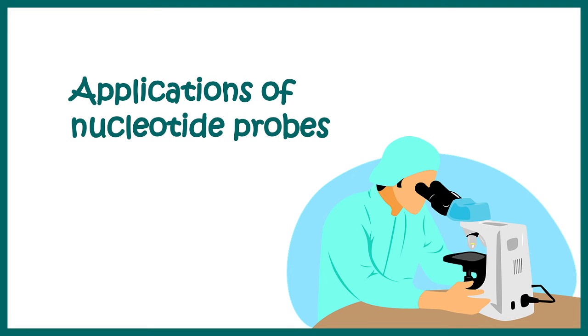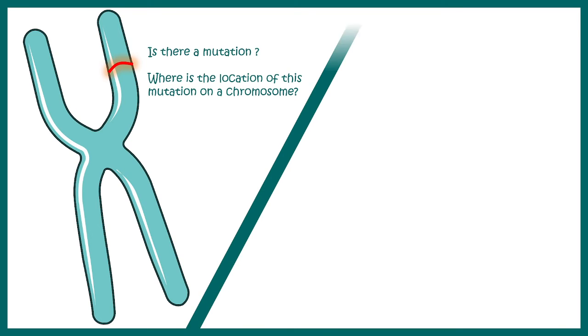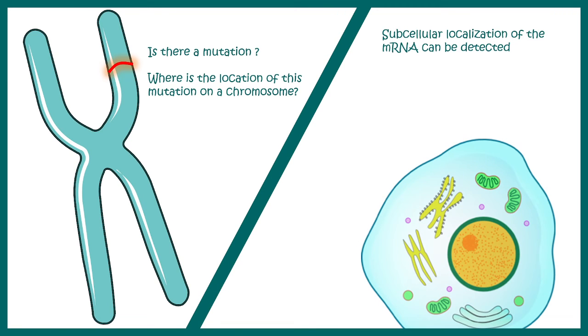Now let's talk about the application of nucleotide probe in detail. First and foremost, we can understand nucleotide probes can be used in fluorescence in situ hybridization to determine in situ localization of a particular mutation or locus of a particular gene. Fluorescence in situ hybridization is a frequently used tool in molecular biology. If you want to learn more about it, click here in the i button. FISH can tell us about several aspects such as is there a mutation, if there is a mutation, what is the location of that particular mutation on a chromosome. It can also give us information about the subcellular localization of an mRNA inside a cell.